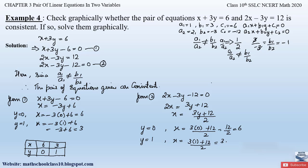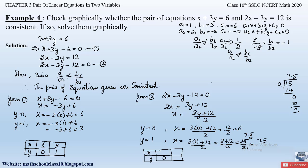15 divided by 2: 2 × 7 = 14, remainder 1; adding a decimal point and a zero gives 10, and 2 × 5 = 10, so we get 7.5. Therefore x = 7.5 when y = 1. The table for Equation 2 is: when y = 0, x = 6; when y = 1, x = 7.5.